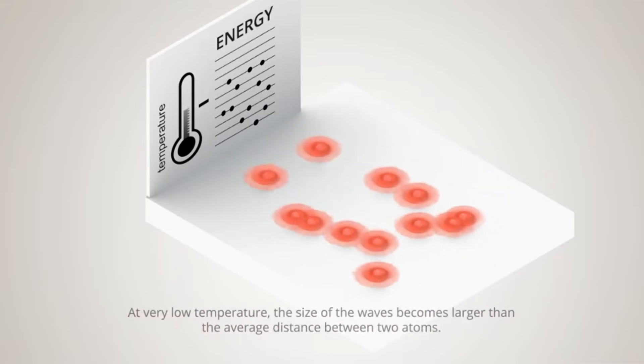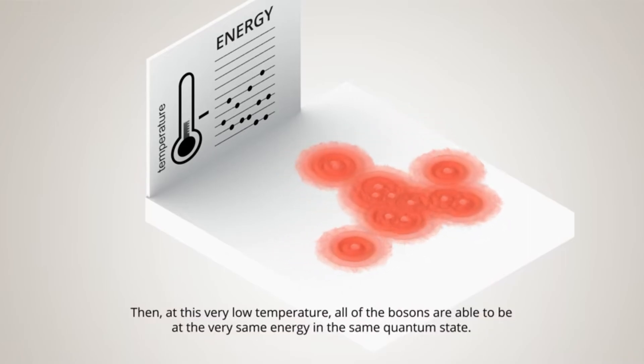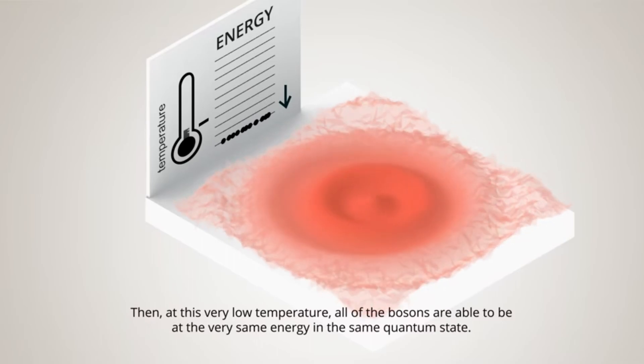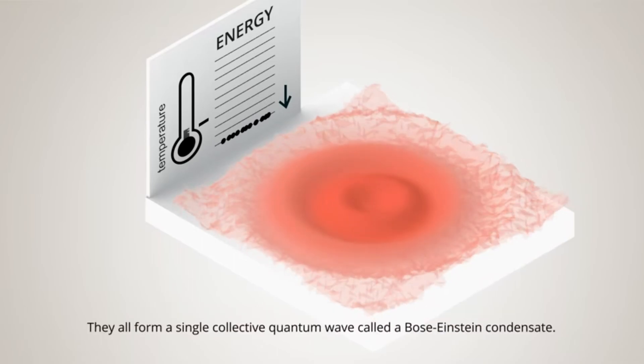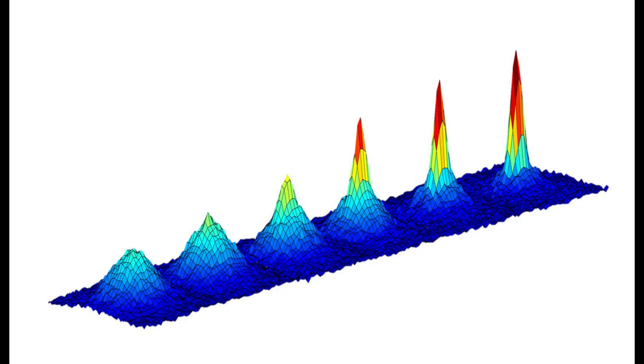In the gas phase, the Bose-Einstein condensate remained an unverified theoretical prediction for many years. In 1995, the research groups of Eric Cornell and Carl Wieman at the University of Colorado at Boulder produced the first such condensate experimentally.